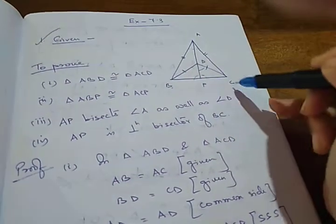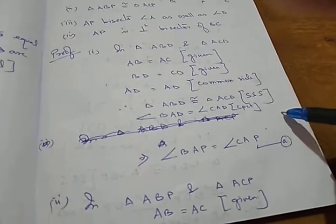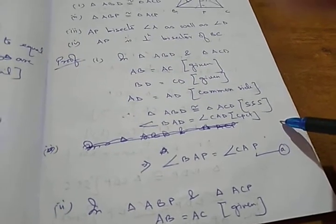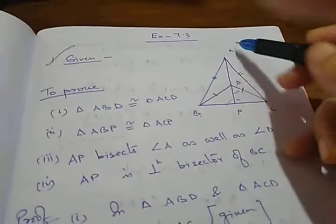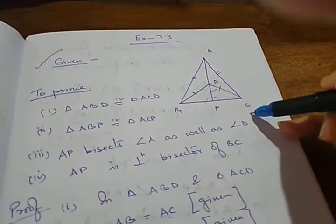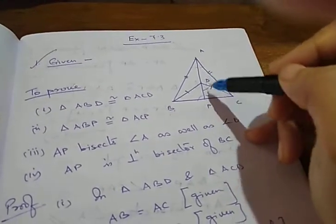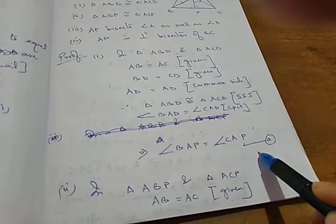BAD equals to CAD — we have written BAD equals to CAD with the help of CPCT. BAD means BAP, and CAD can also be written as CAP — just replacing D with P. The same angle is denoted. So we have written and named this as A.